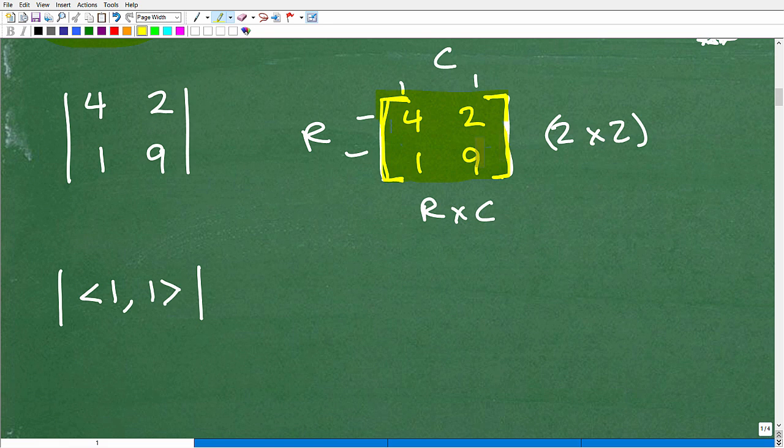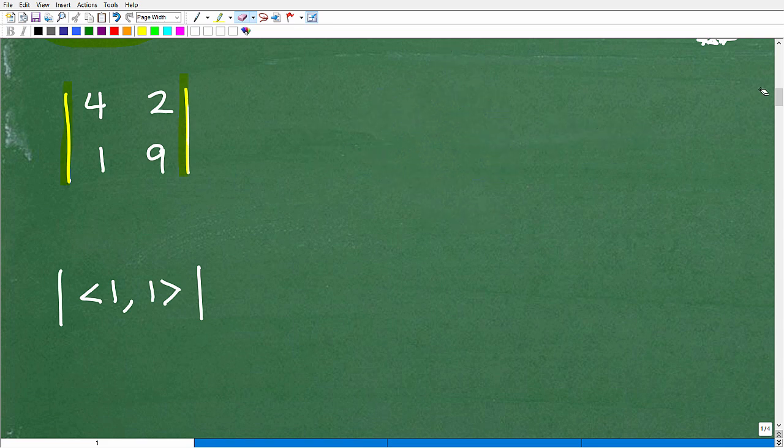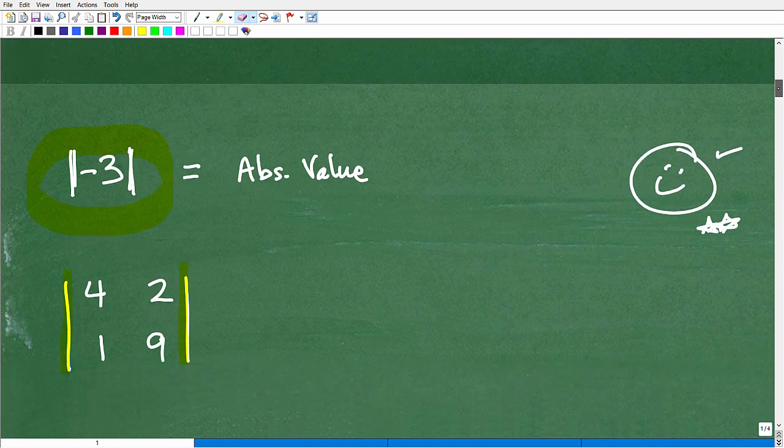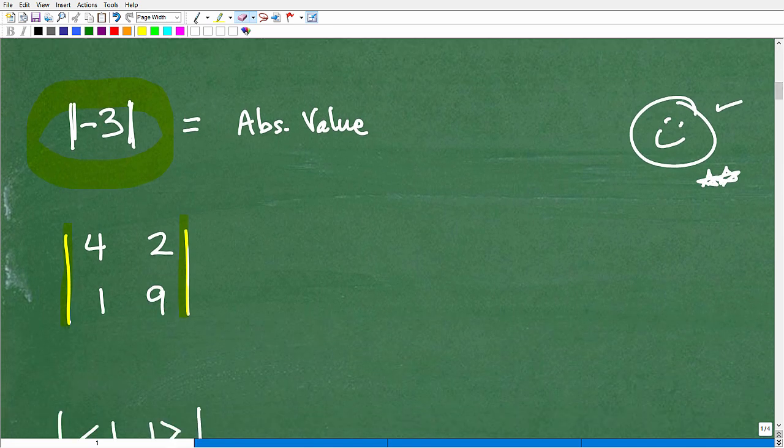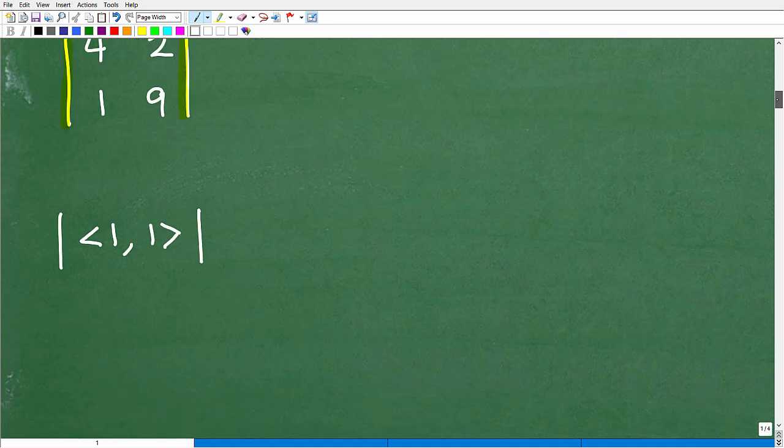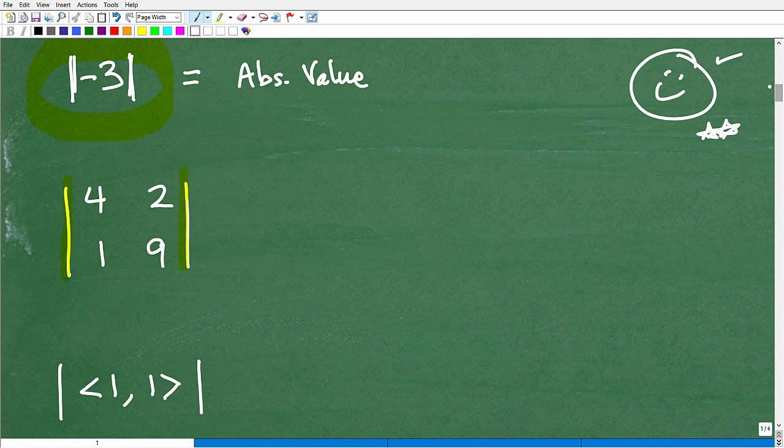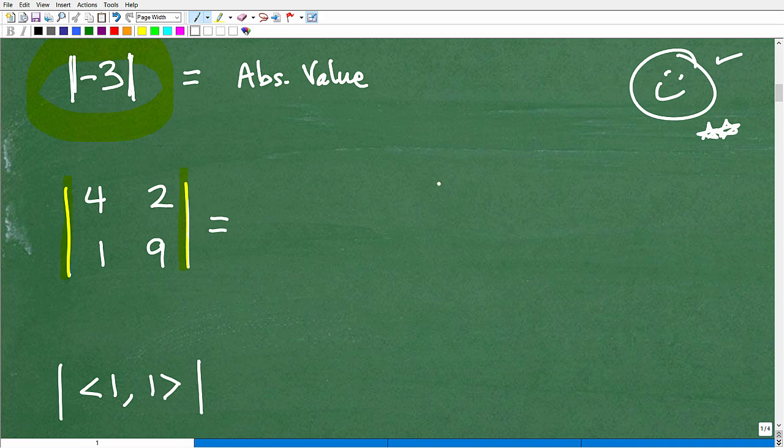Okay? Now, if I want to find the determinant of this matrix, I need to put the same entries here, 4, 2, 1, 9, and I put these little bars around it. So this right here does not mean find the absolute value of this matrix. Okay? Now, of course, once you learn about the absolute value, you might be saying, oh, they want me to find the absolute value of all this stuff. No, it does not mean that. It means find the determinant of this matrix.